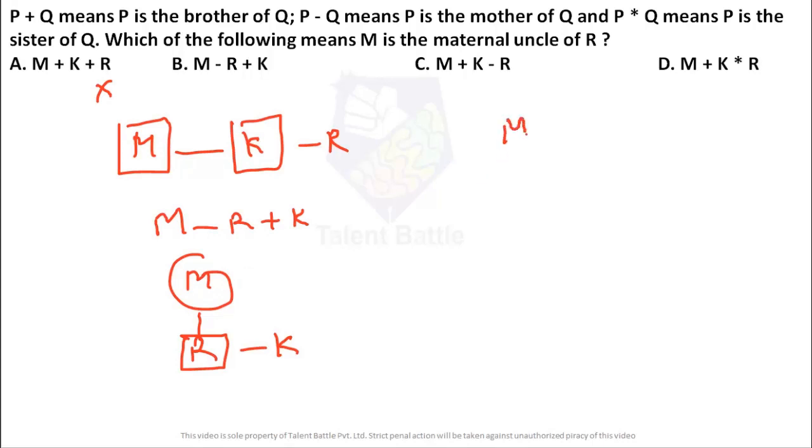Check the next option, M plus K minus R. Plus means brother. So M is the brother of K. Minus R means, so minus sign denotes to mother. So K is the mother of R. Now check the relation between M and R. R's mother is K. K's brother is M. So mother's brother you can say uncle or maternal uncle. So M is maternal uncle of R which is the correct answer. So to solve these type of questions just you need to draw the diagrams using notations. Then it will be very easy for you to get the answer.